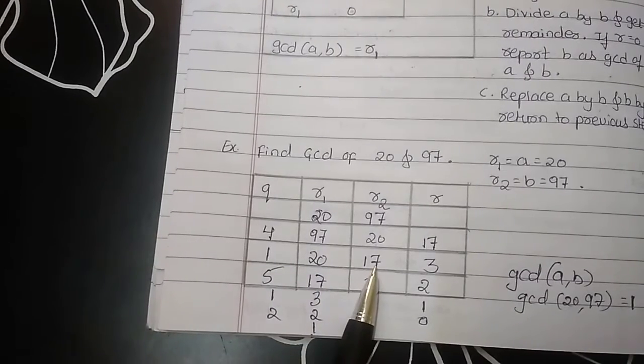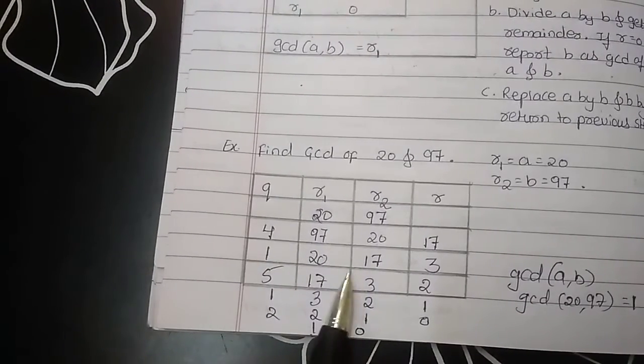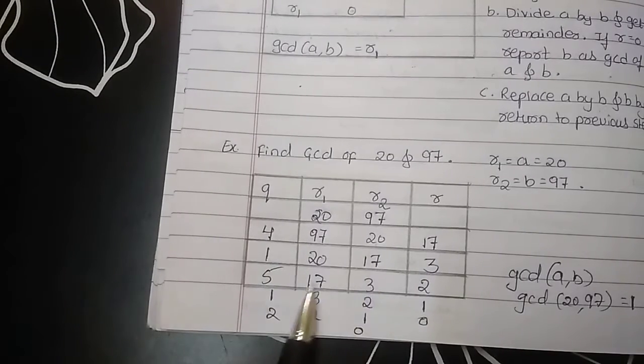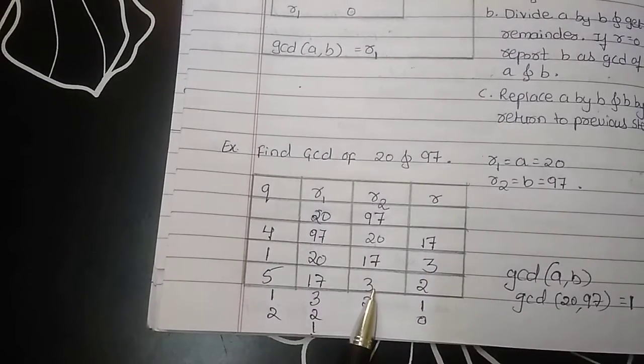Now, 20 is not less than 17. So, divide it. 17, 1, 0, 17, remainder is 3. Again, R2 will become R1 and R become R2.